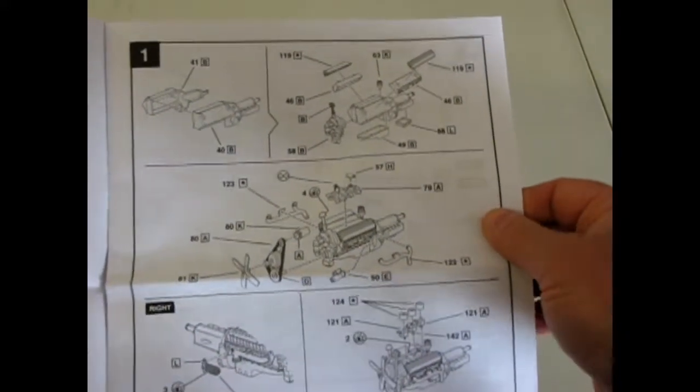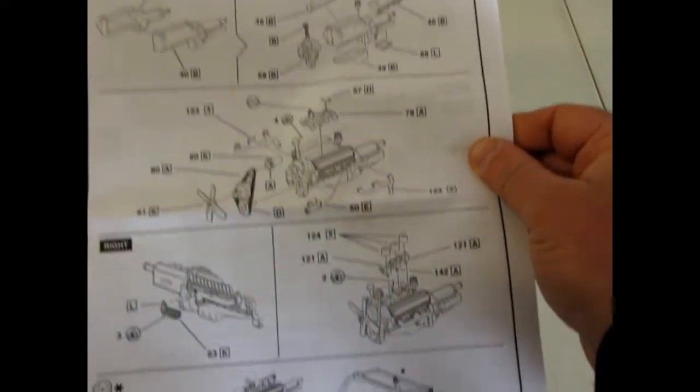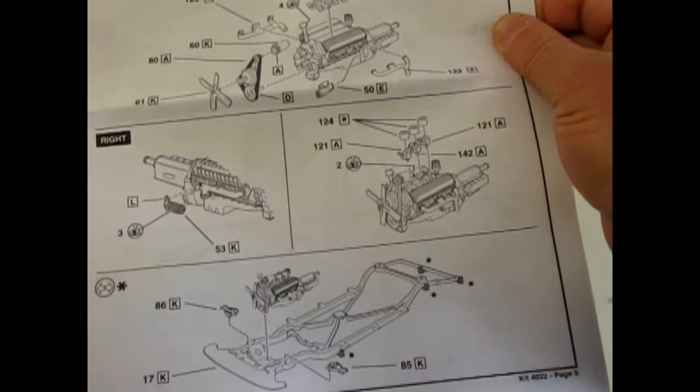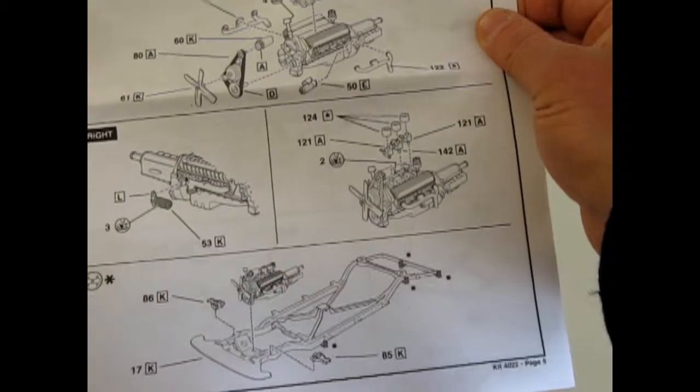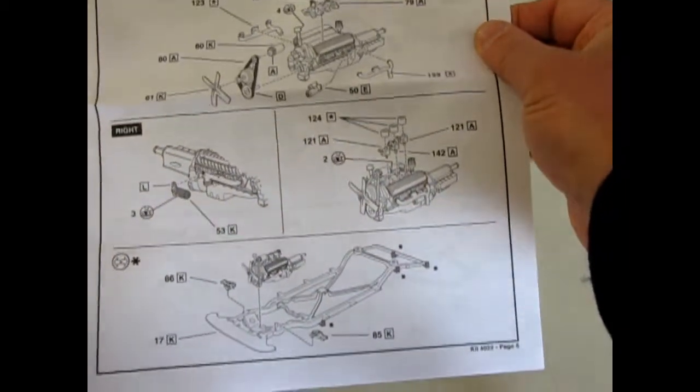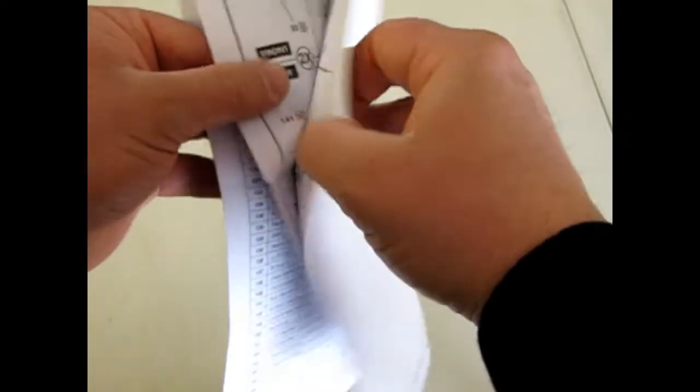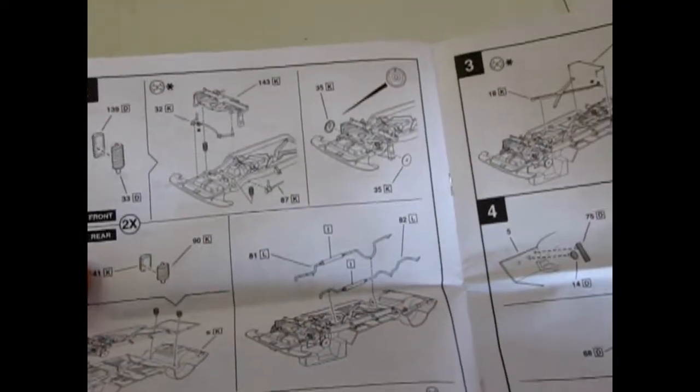And there's the Olds Rocket 303 motor. And tri-carbs, and a description showing how it goes into the frame. The 303 engine was one of the engines that was very popular at NASCAR back in this time frame.